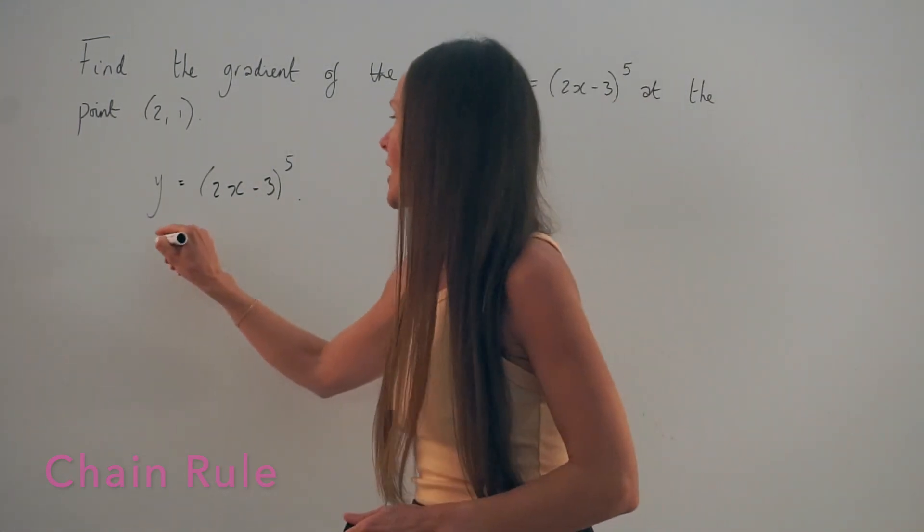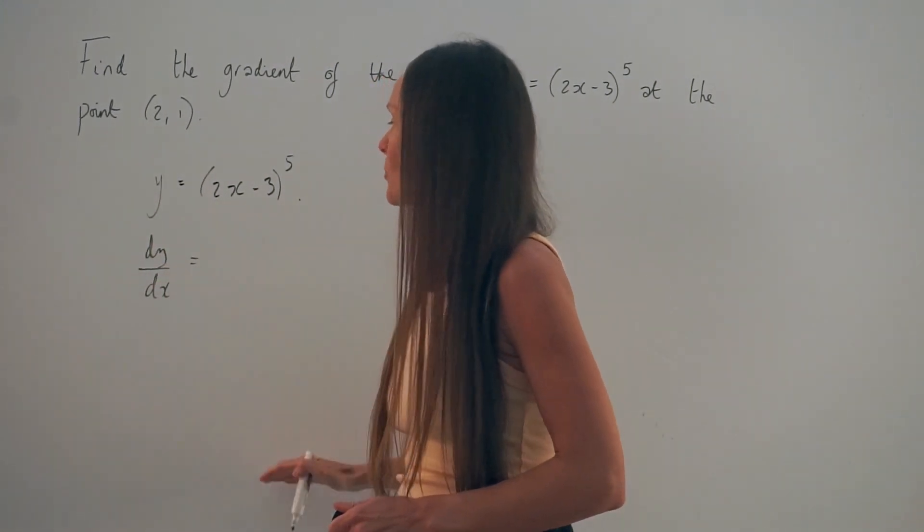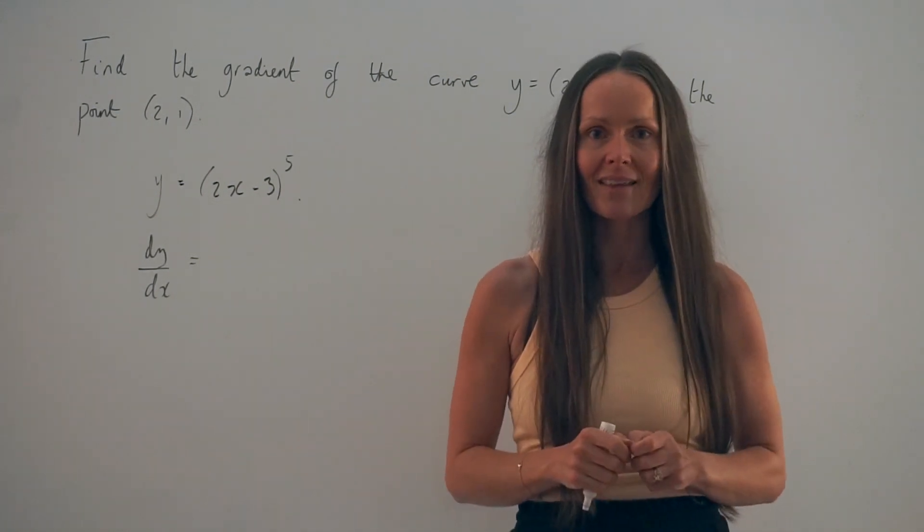So when we use the chain rule, we differentiate the outside of the brackets, the inside of the brackets, and we multiply those two answers together.